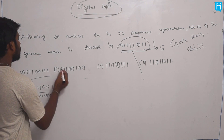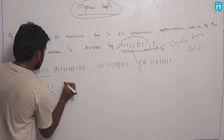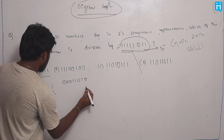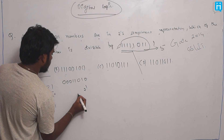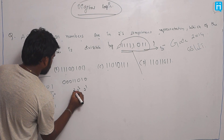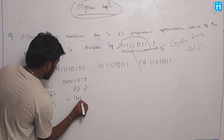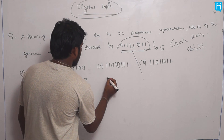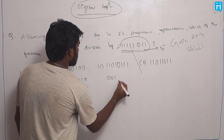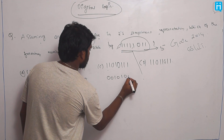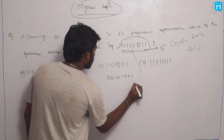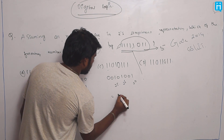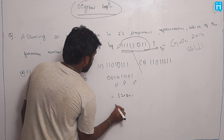For the second option, converting from 2's complement: the active bits give 2 power 1, 2 cubed, and 2 power 4, which is 16 plus 8 plus 2 equals 26. For the third option, converting from 2's complement: the active bits give 2 power 0, 2 power 1, 2 squared, 2 cubed, 2 power 4, and 2 power 5, which is 32 plus 8 plus 1 equals 41.